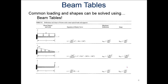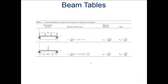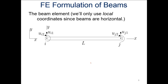Also look at beam tables. For some common, relatively basic loadings, we can solve these just using beam tables — you don't have to go through the whole FE process. So if you have just a basic distributed load and a cantilever beam, you can look up the deflection equation. For the FE formulation of beams, the beam element has nodes at either end and we'll only use local coordinates since beams are horizontal.